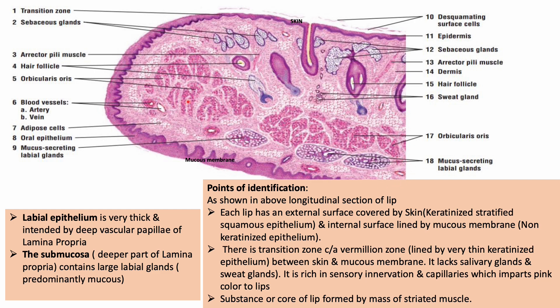Deep to the labial glands is the deep musculature, formed by the orbicularis oris muscle. The key identification points for the lip slide in longitudinal section are: the substance is formed by a mass of muscle; each lip has an external surface covered by skin and an internal surface covered by mucous membrane; and there is a transition zone between them known as the vermilion border.